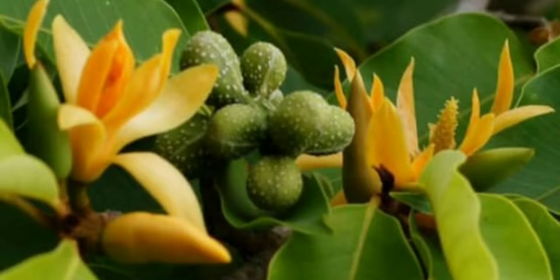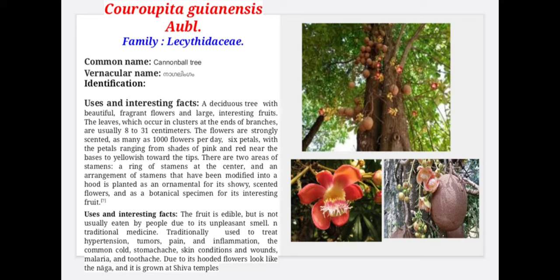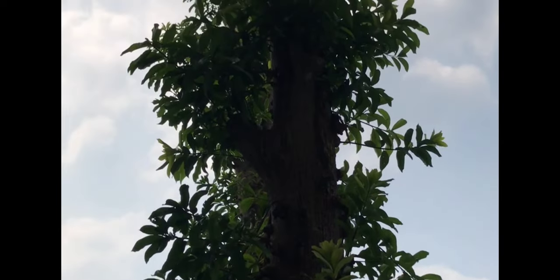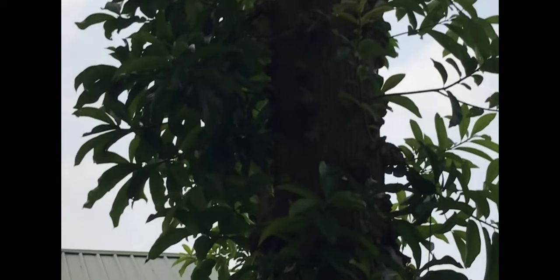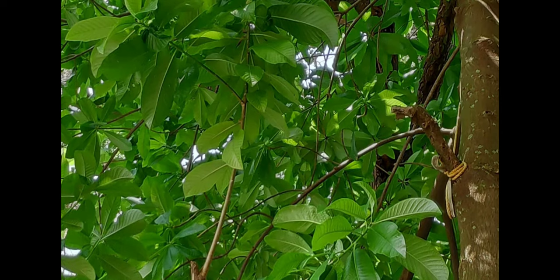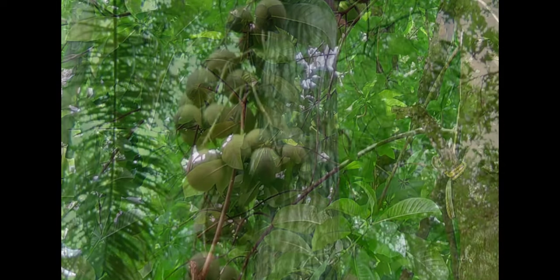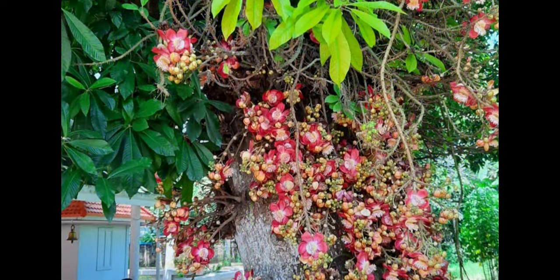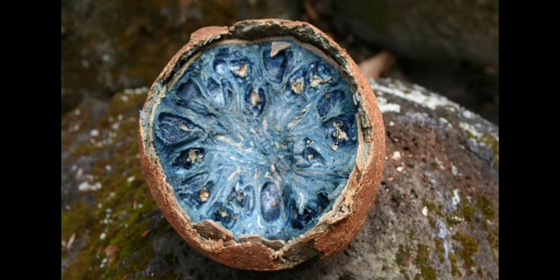Couroupita guianensis comes under the family Lecythidaceae. Commonly called cannonball tree and vernacularly as Nagalinga. It is a deciduous tree with beautiful fragrant flowers and large interesting fruits. Leaves occur in clusters at the end of branches. Flowers are strongly scented with petals arranged in shades of pink and red near the base to yellowish towards the tip. Due to its hooded flowers that look like a naga, it is usually grown at Shiva temples. The fruit is edible but not usually eaten due to its unpleasant smell.